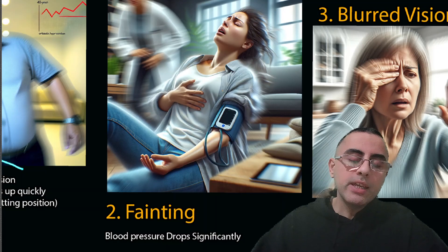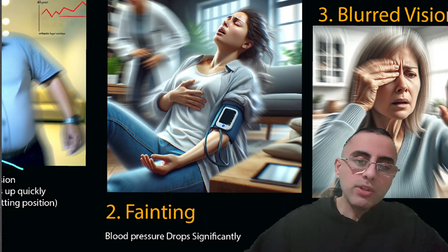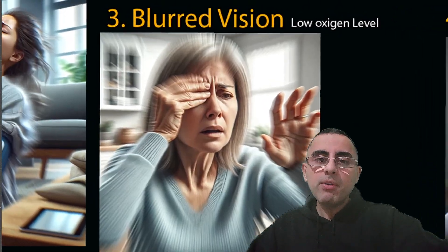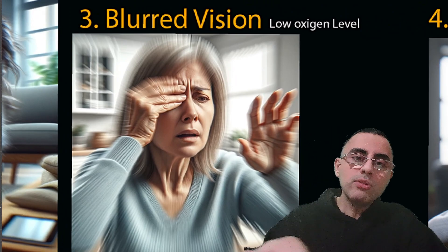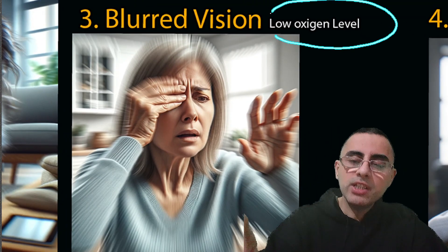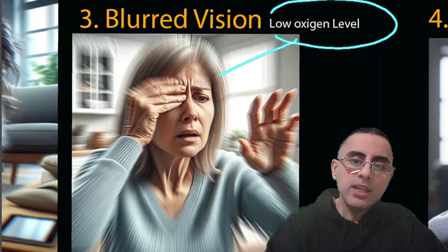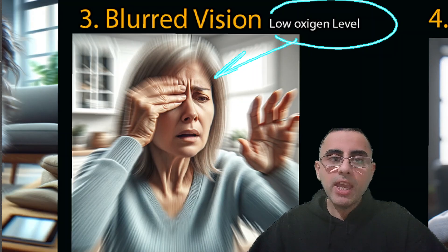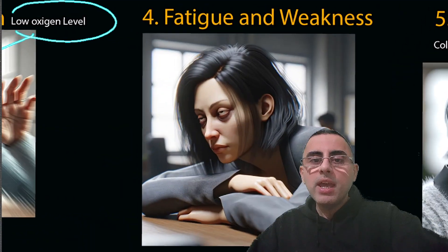The second most common symptom is fainting. Fainting occurs when there is a severe and significant drop of blood pressure and there is a temporary loss of consciousness. The third important symptom is blurred vision, which occurs because of less blood and less oxygen to the eyes.